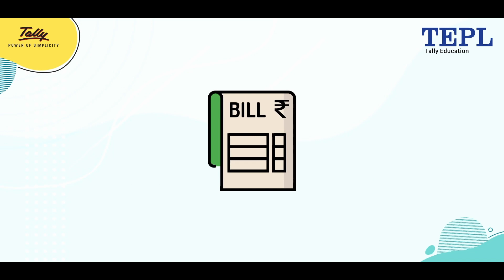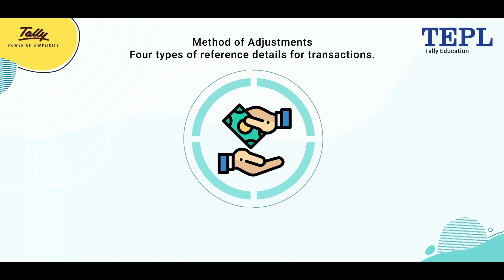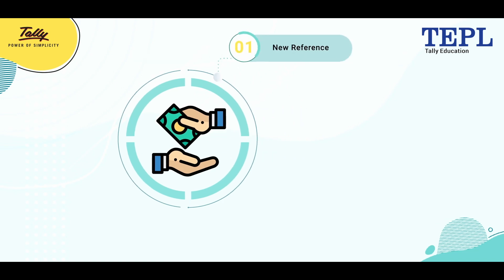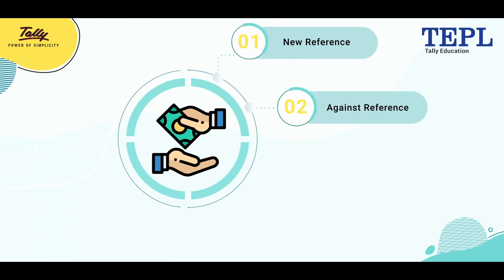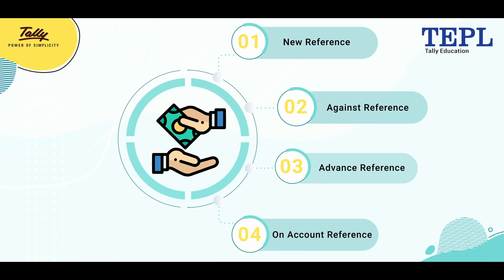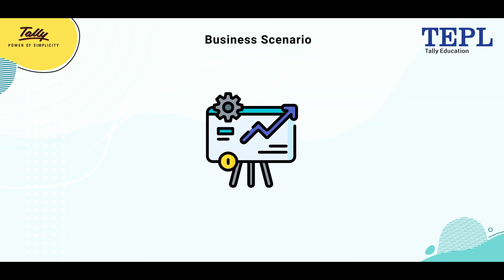Without bill-wise entry, tracking of pending bills will be difficult for the user, resulting in adjusting the wrong bill. In Tally, four types of reference details can be entered for transactions. These are also called methods of adjustments. The reference details are: new reference, against reference, advance reference, and on account reference.